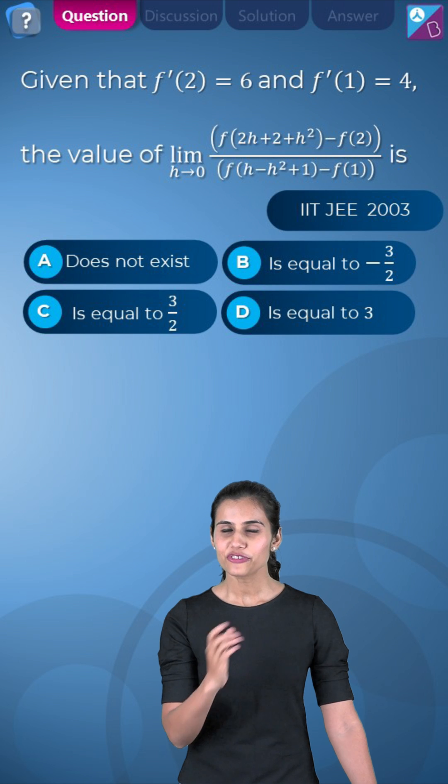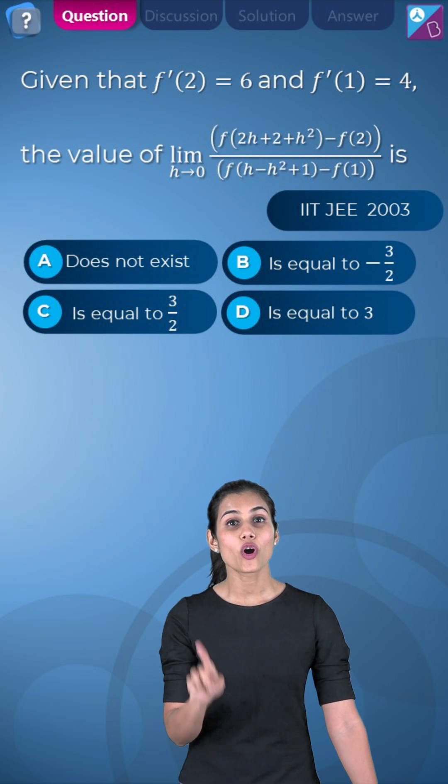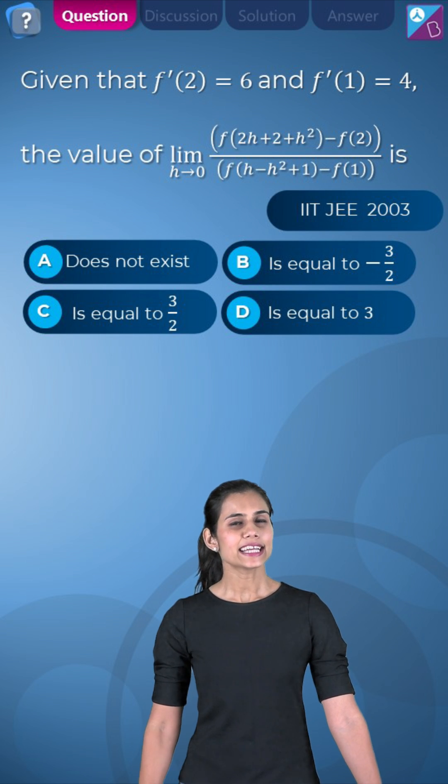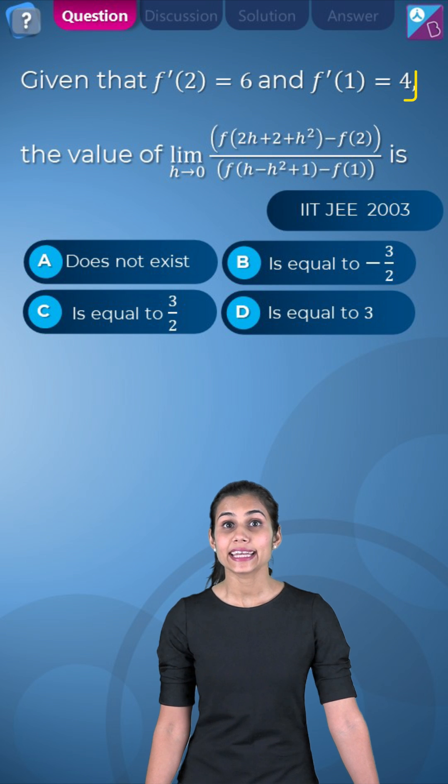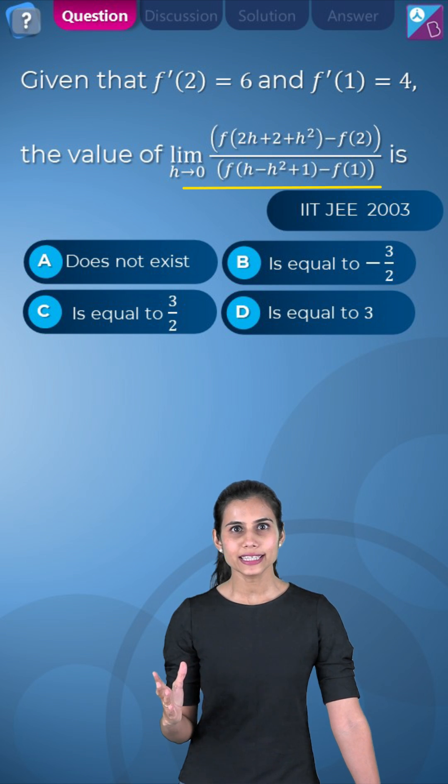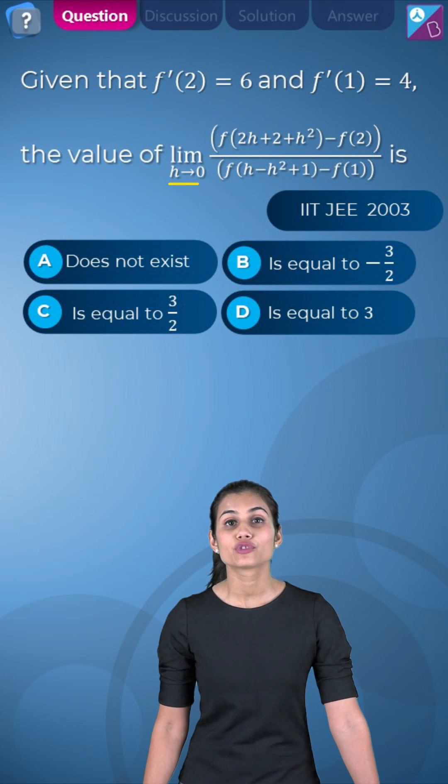Let me share with you a very intriguing past year JEE question from limits. It says that if f'(2) is 6 and f'(1) is 4, then compute the limit of this giant expression as h approaches 0.